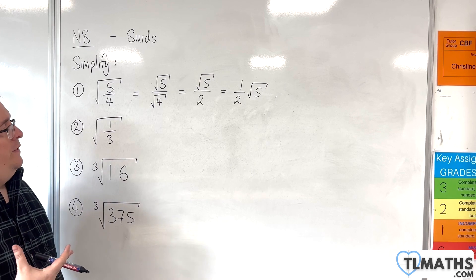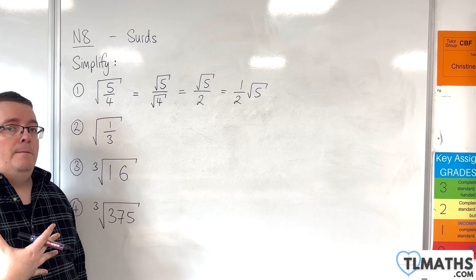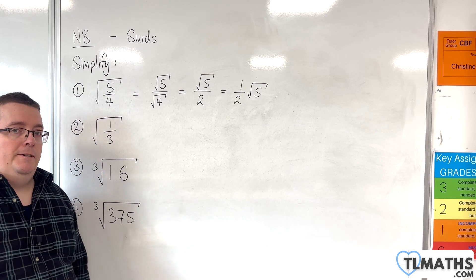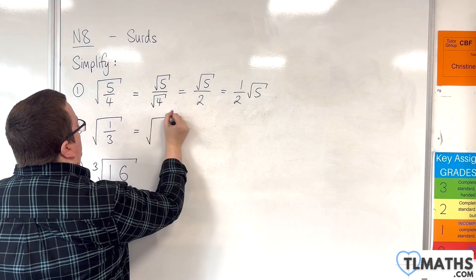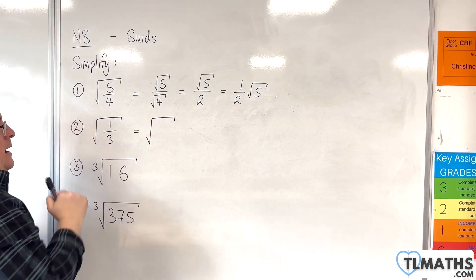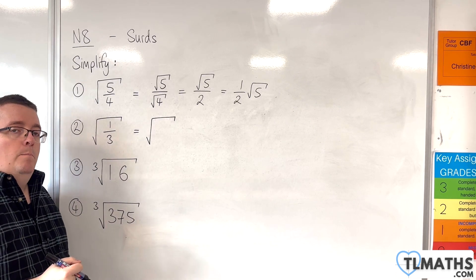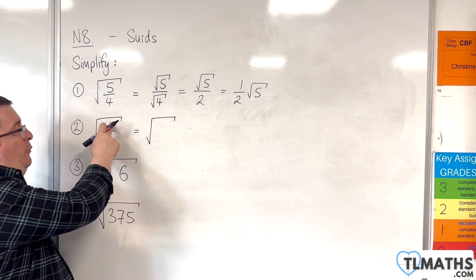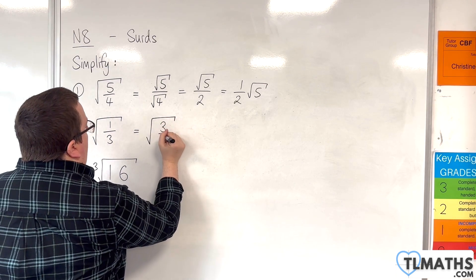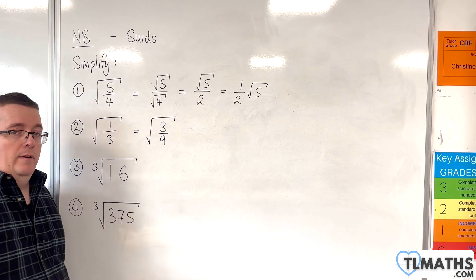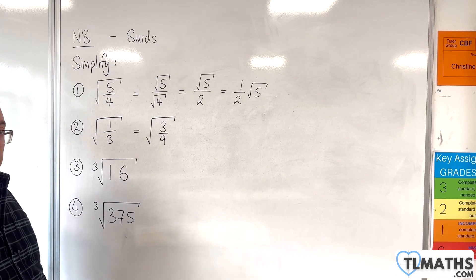So, the idea here is to make sure that I don't have a surd in the denominator. So, what I'm going to do is I'm going to write down an equivalent fraction to 1 third by multiplying top and bottom by 3. Now, this is in order to get a square number in the denominator. So, I'm going to write 1 third as 3 ninths.